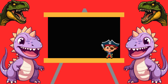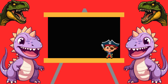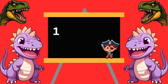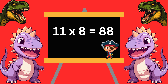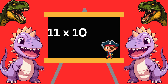11 sixes are 66. 11 sevens are 77. 11 eights are 88. 11 nines are 99. 11 tens are 110.